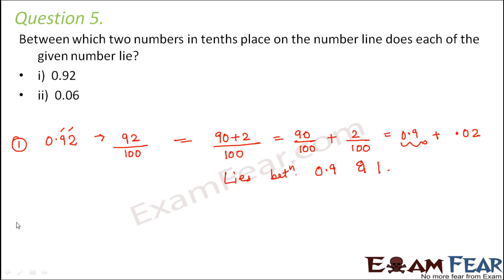Now let's look at the next one which is 0.06. So 0.06 can be written in the form of fractions as 6 by 100. So this can be written as 10 minus 4 divided by 100. So this can be written as 10 by 100 minus 4 by 100. So this 4 by 100 is a proper fraction. So its value will be less than 1.